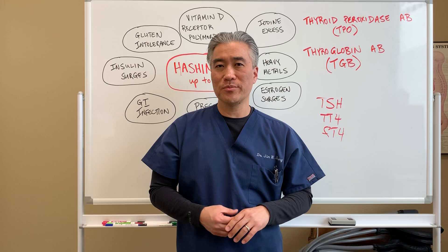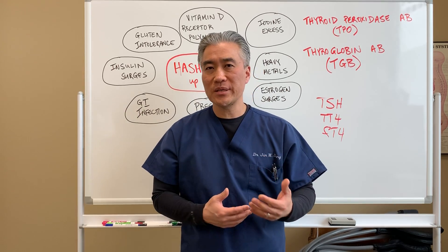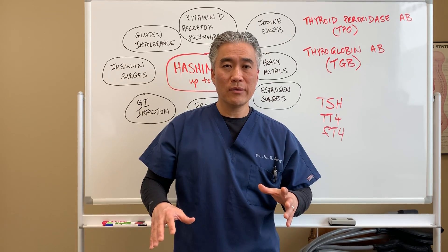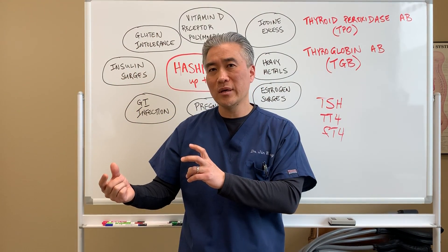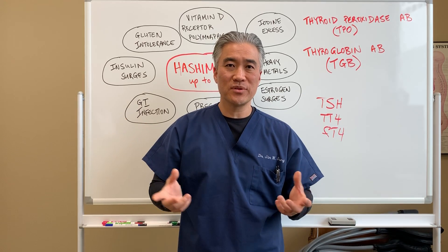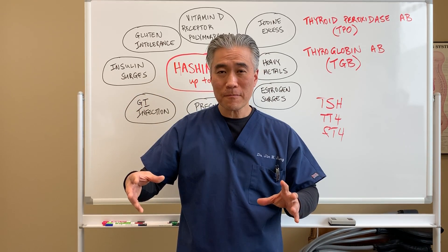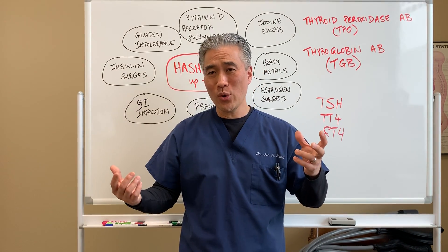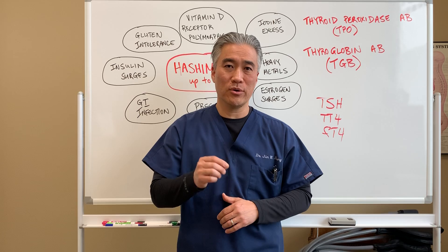One of the classic signs and symptoms of Hashimoto's is the waxing and waning of symptoms. Sometimes you feel very sluggish, sleepy, and constipated; sometimes you may feel very agitated, anxious, and have loose stool. You have this fluctuating presentation of hypothyroid and a little hyperthyroid, and your TSH will start to fluctuate between low and high. This waxing and waning of symptoms is a classic sign that you possibly have Hashimoto's thyroiditis, because every time your immune system attacks the thyroid it creates fluctuations of thyroid hormone.